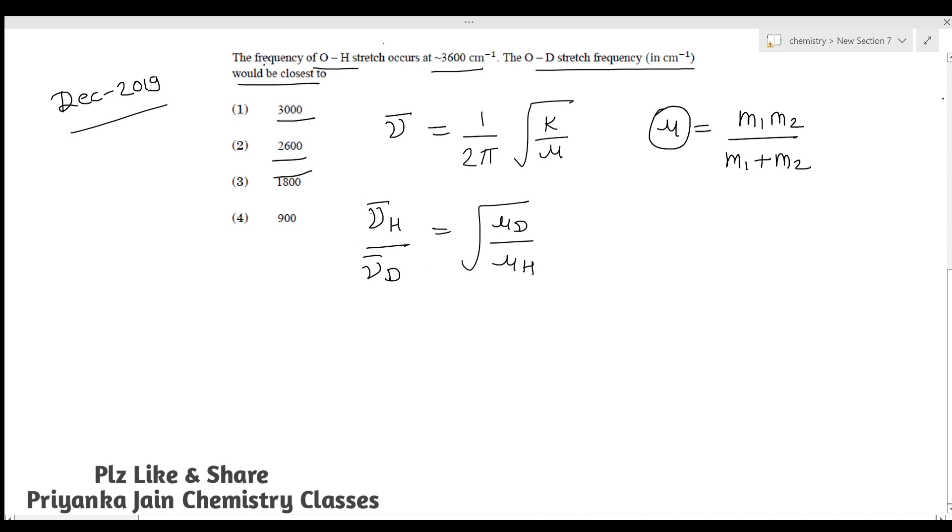You have to find this μ value. We can write: ν(O-H)/ν(O-D) = √(μ(O-D)/μ(O-H)), because stretching frequency is inversely proportional to the square root of reduced mass. If you have done such questions, you know that this value equals 1/√2. So we can write: ν(O-D) = (1/√2) × ν(O-H).